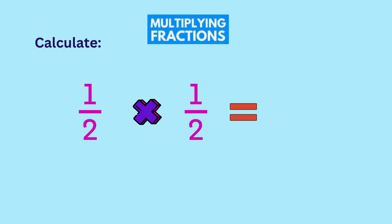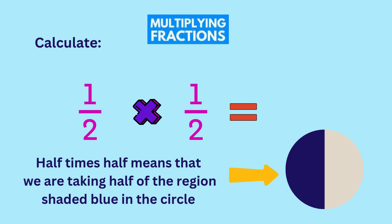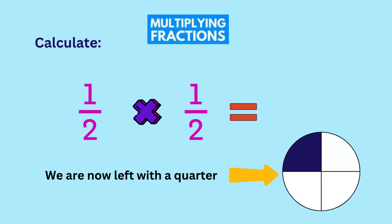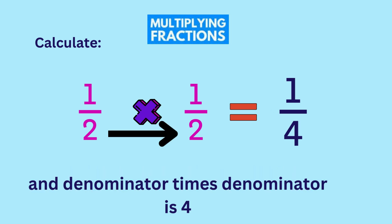Let's begin with a half times a half. Here is a half, represented by the shaded region in the circle. So now, a half times a half means that we are taking half of the shaded region. As you can see, we are now left with only a quarter of the circle. Therefore, a half times a half equals to a quarter. Notice that if you multiply the two numerators and the two denominators, you get the same result. That's a quarter.